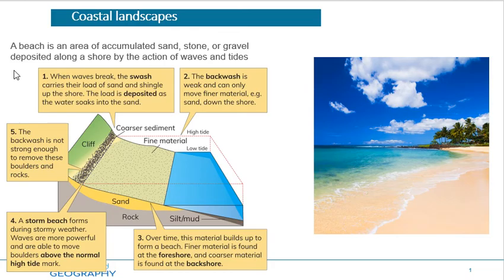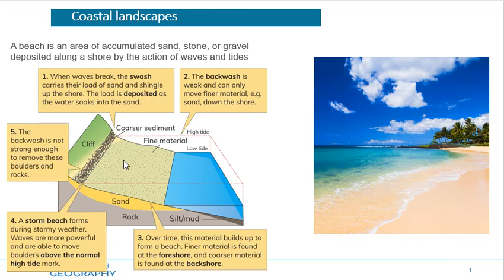When waves break and the swash hits the shore, the swash carries the load — things like sand, shingle, and little pebbles. This load is deposited as the water soaks into the sand. The wave hits the shore and the material gets dropped or deposited. The backwash for constructive waves is weak, so the weak backwash can only carry finer, smaller material like sand back down the shore.